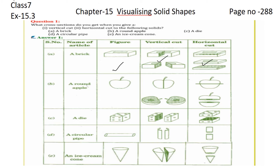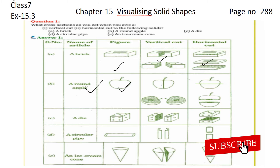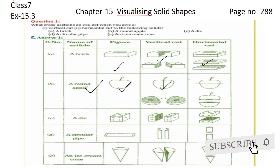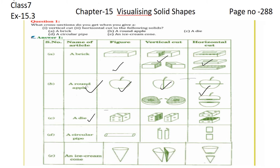This is the figure of the apple. This is the vertical cut and this one is the horizontal cut. Now comes to the third one — this is the die, and this is the figure of the die we are having.